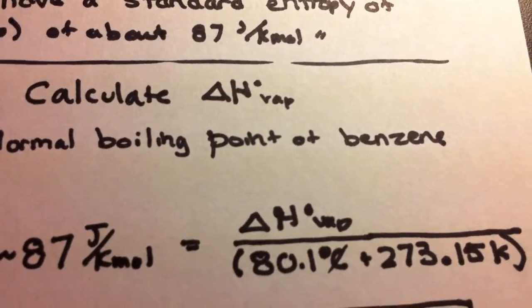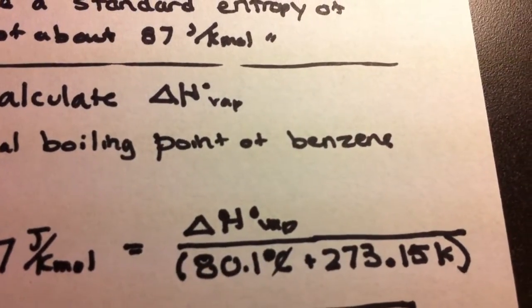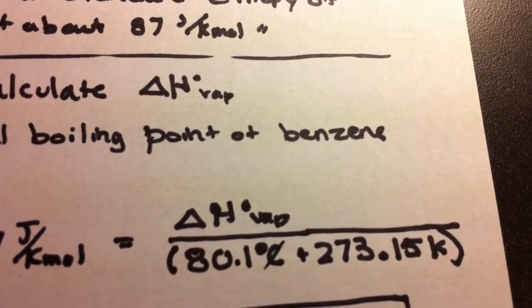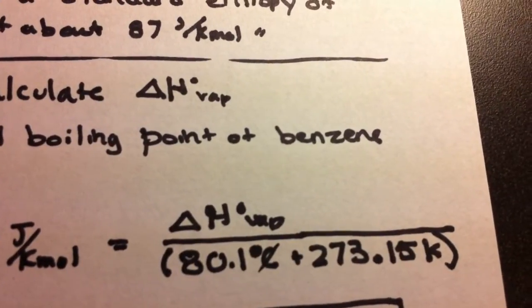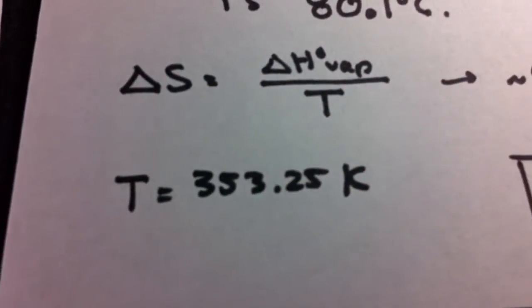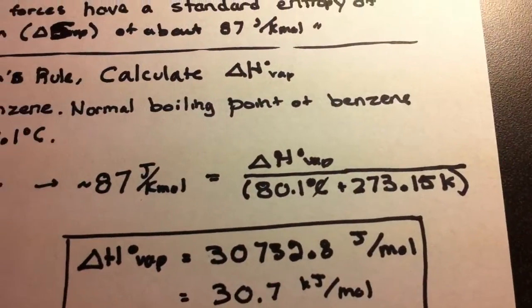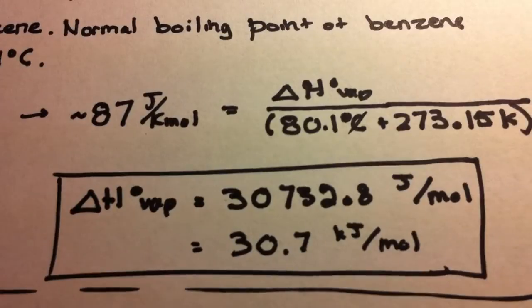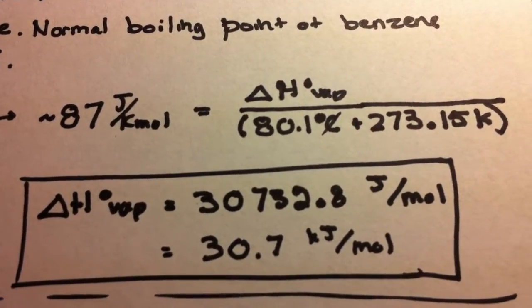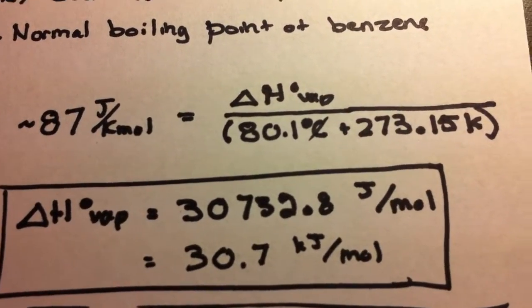We're trying to find delta H, and for temperature, we're going to add 273.15 Kelvin to our degrees Celsius value. That's going to be temperature equals 353.25 Kelvin. Cross-multiplying this, we will get delta H equals 30.7 kilojoules per mole, approximately.